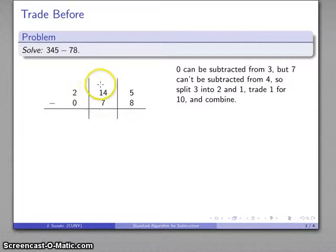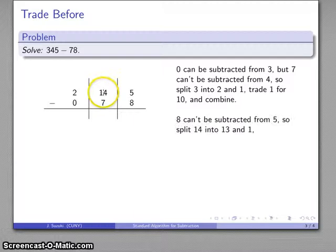And I can subtract 7 from 14. Not a problem. But I still have this problem over here in the last column. I need to subtract 8 from 5, and I don't have enough. So, again, what I'm going to do is I'm going to trade so I do have enough. So I'm going to split this 14 into a 13 and 1, and that'll give me something to trade.